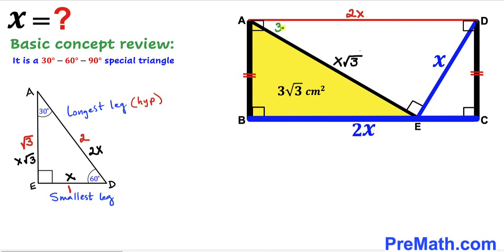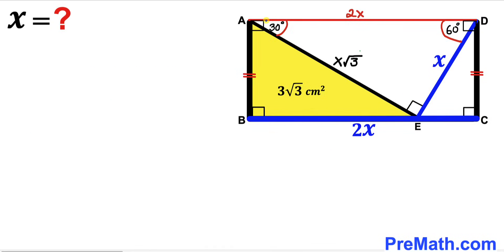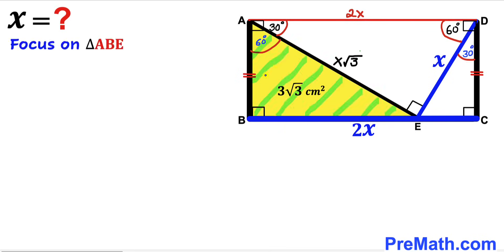Therefore, in triangle AED, the angle at A is 30 degrees, the right angle is 90 degrees, and the remaining angle is 60 degrees. And since this angle is 90 degrees and this angle is 30 degrees, the remaining angle is 60 degrees; likewise, in the adjacent triangle, the 60-degree and 90-degree angles give a 30-degree angle.